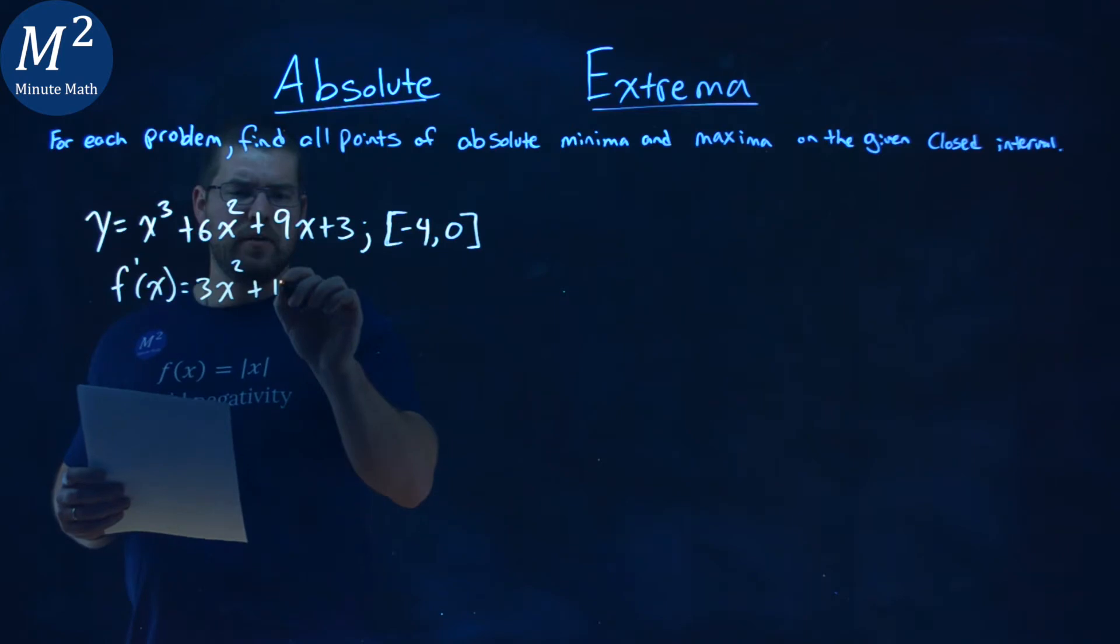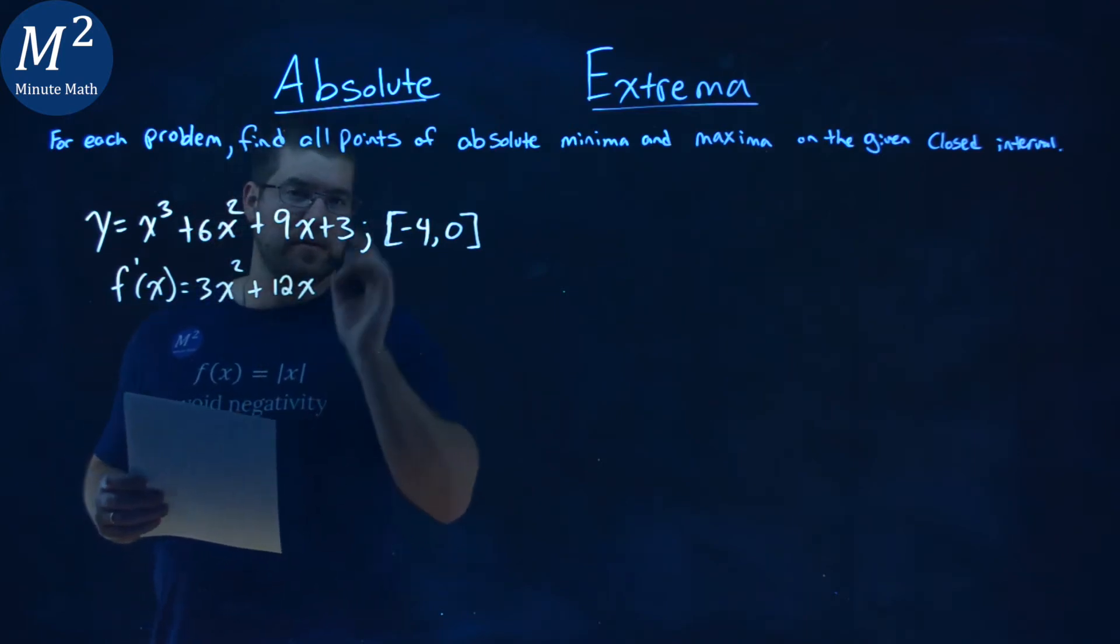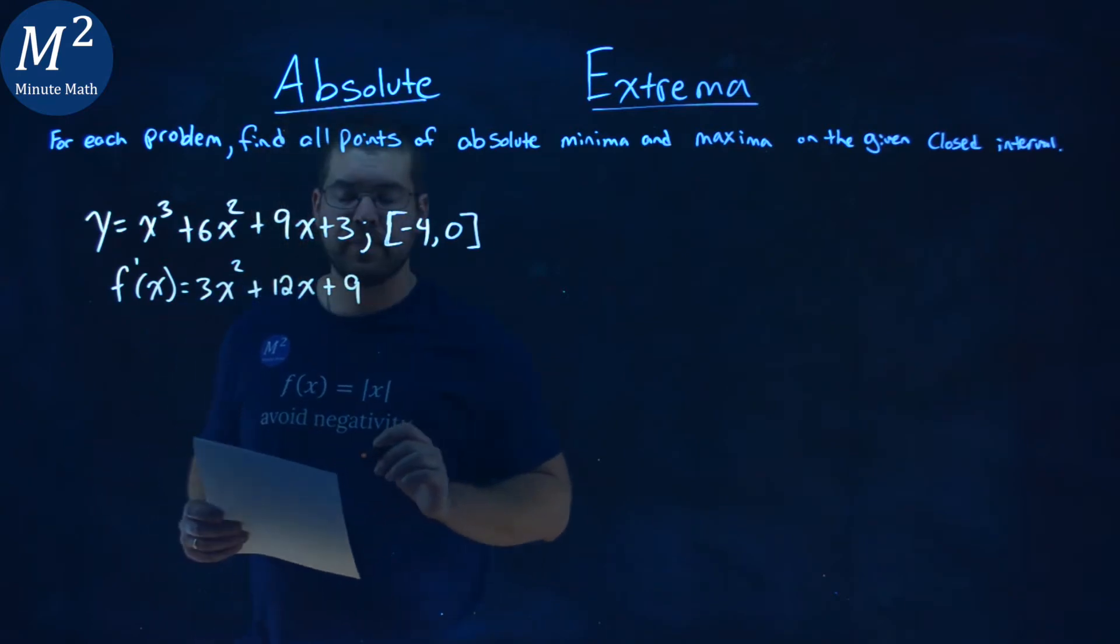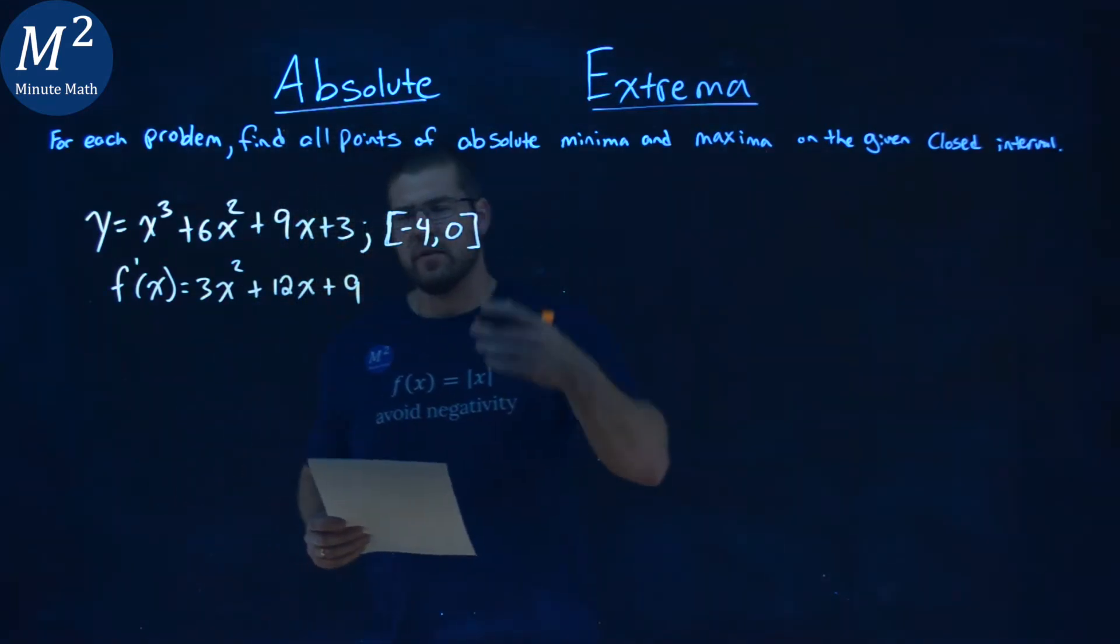2 times 6 is 12, 12x subtract the exponent by 1 is 1, and then plus just the 9. The derivative of a constant is 0.